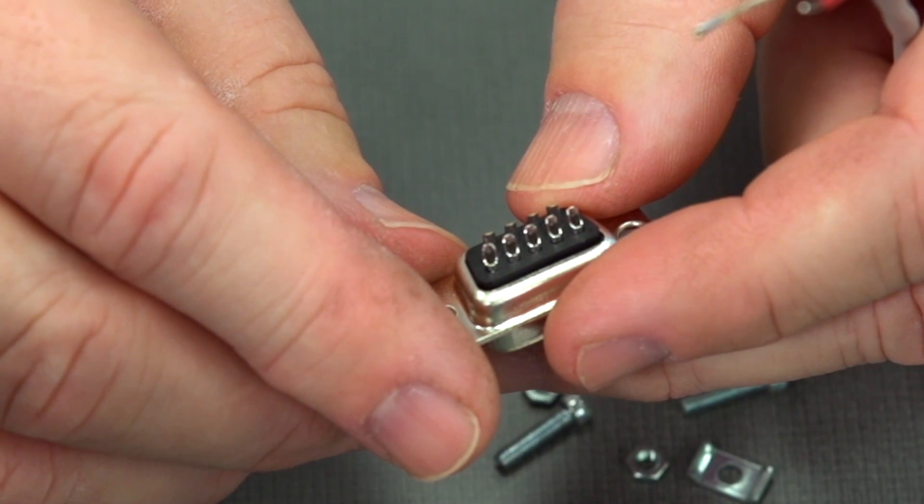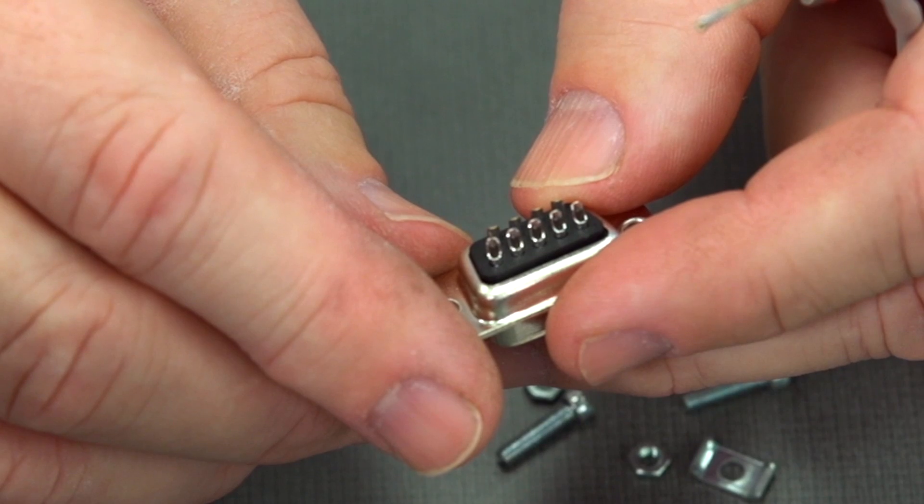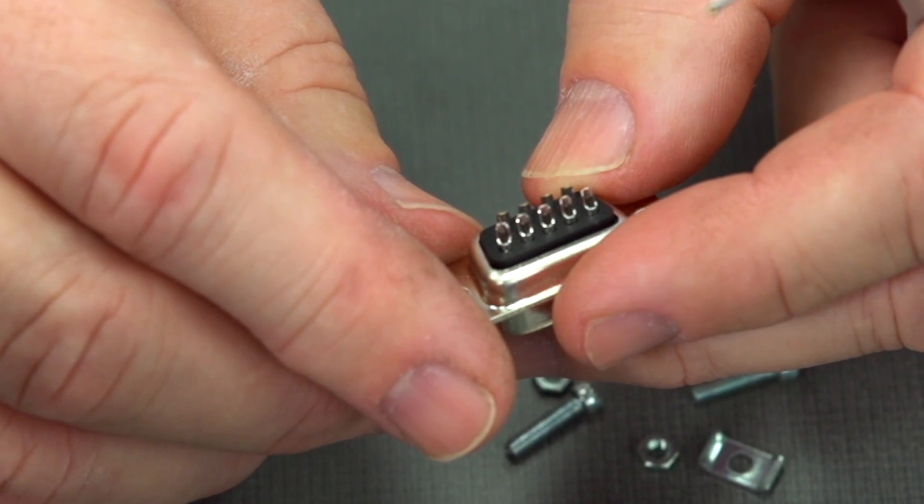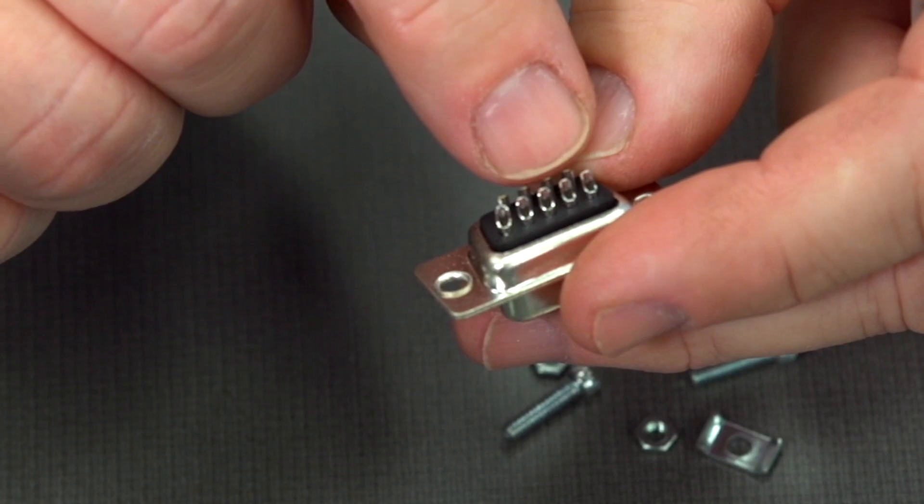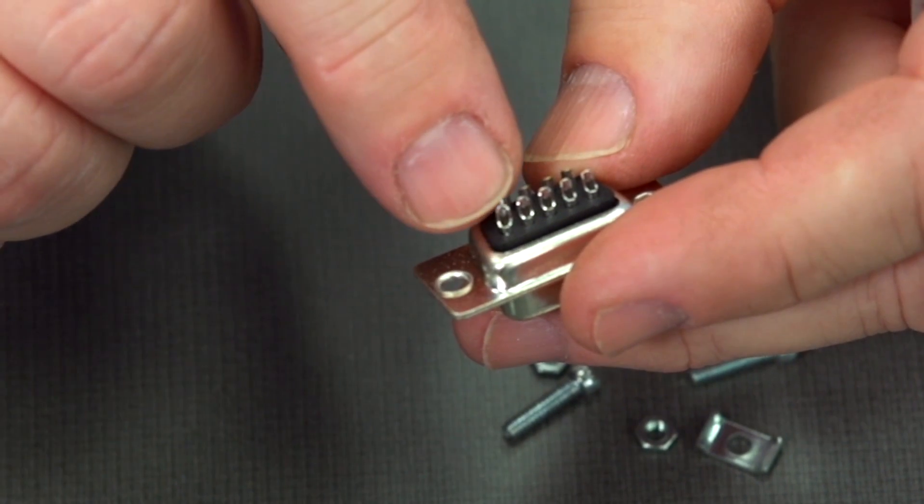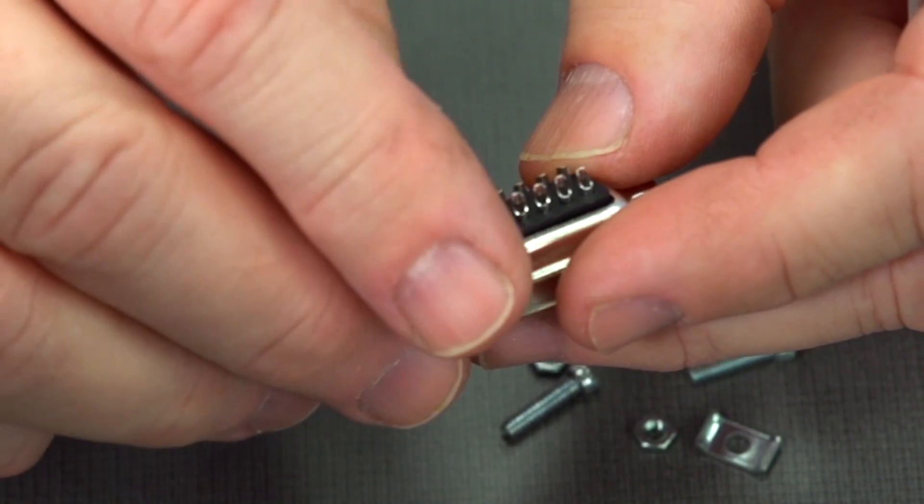On the other connector that we did, pin 3 was transmitted, so we're going to put that to the receive here. We're going to put the red to pin 3. What we're looking at is black, red, and a common shield. Let's go ahead and prepare our connector here.